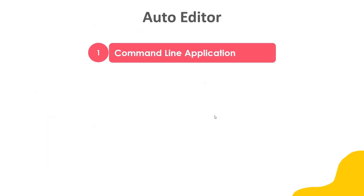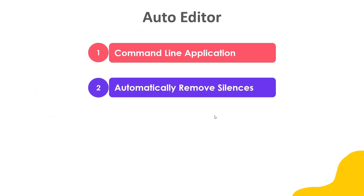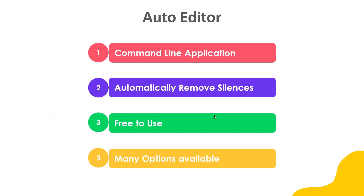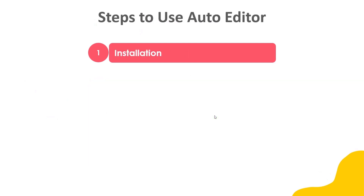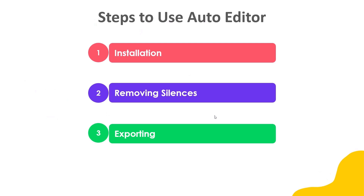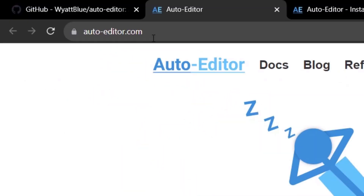Welcome to our tutorial on how to use Auto Editor. It's a command line application that automatically removes silences from your audio and video files, and the best thing is it is free to use and has many options available. There are three different steps to use Auto Editor: the first step is installation, the second step is removing silences, and the third step is exporting in your desired format.